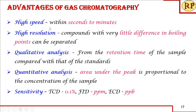Gas chromatography has many advantages: very high speed — up to 70 components in a mixture can be analyzed within seconds to minutes; high resolution — compounds with very little difference in boiling point can be separated; qualitative analysis via retention time comparison with standards; quantitative analysis via the area under the peak proportional to concentration; and very high sensitivity — TCD at 0.1%, FID at ppm level, and ECD at ppb level.